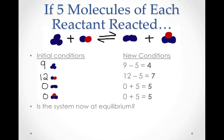What if 5 molecules of each reactant reacted? Would the reaction then be at equilibrium? If 5 molecules of each reactant were consumed to produce 5 molecules of each product, then the concentrations would be 4, 7, 5, and 5 respectively. Plugging these numbers into the equilibrium expression only gives a value of 0.9. This system is not at equilibrium because 0.9 is not 16, the equilibrium constant for this reaction at this temperature. The system must shift to the right to produce more products because 0.9 is less than 16. That would increase the numerator in the ratio and decrease the denominator, increasing the value of the equilibrium expression, which is what needs to happen for 0.9 to get to 16.